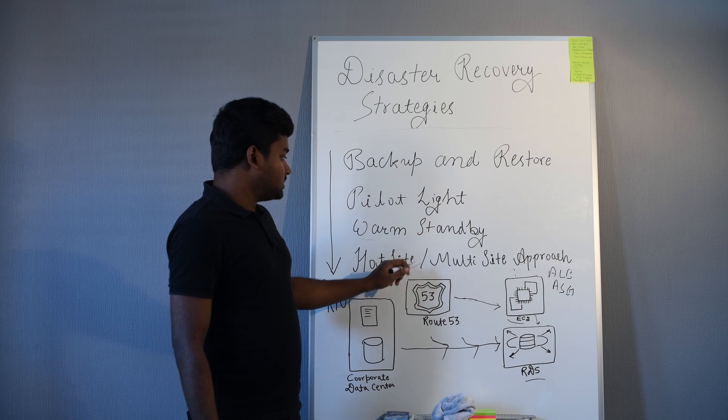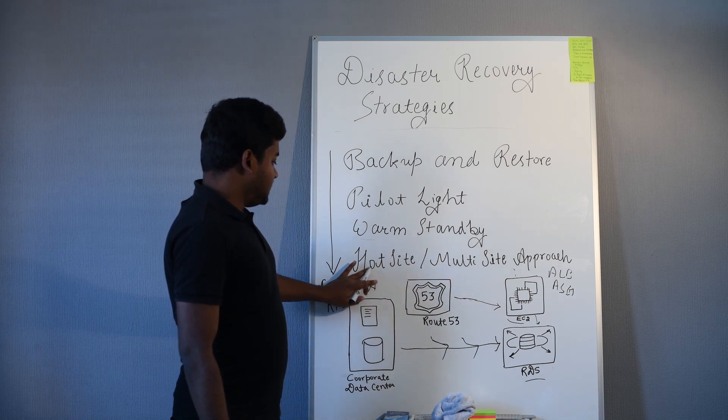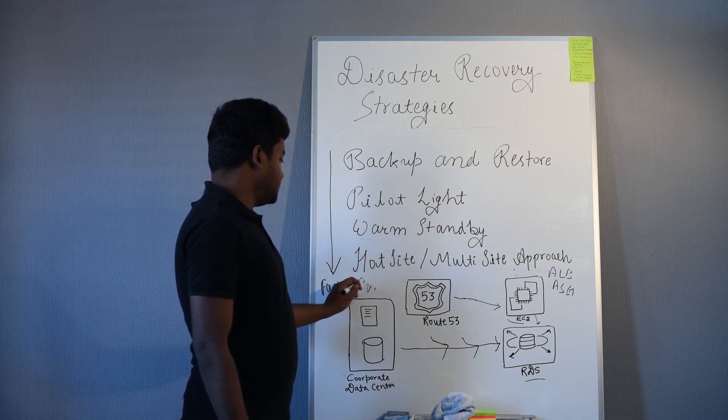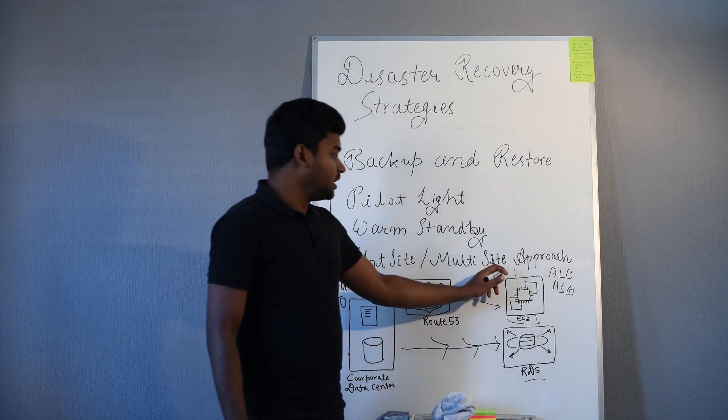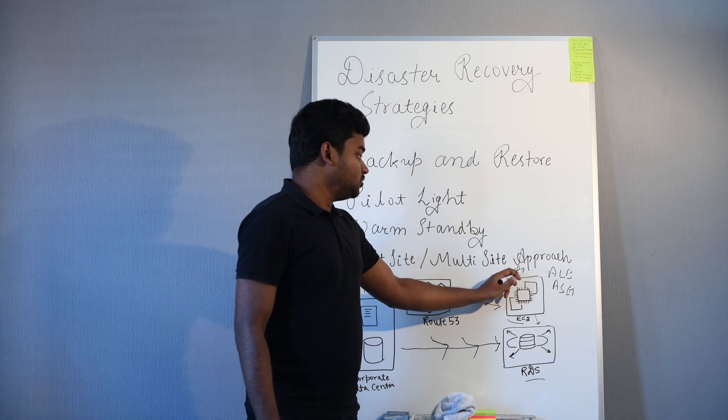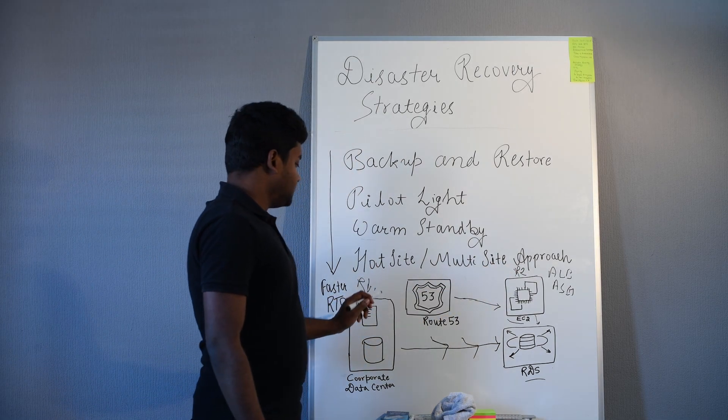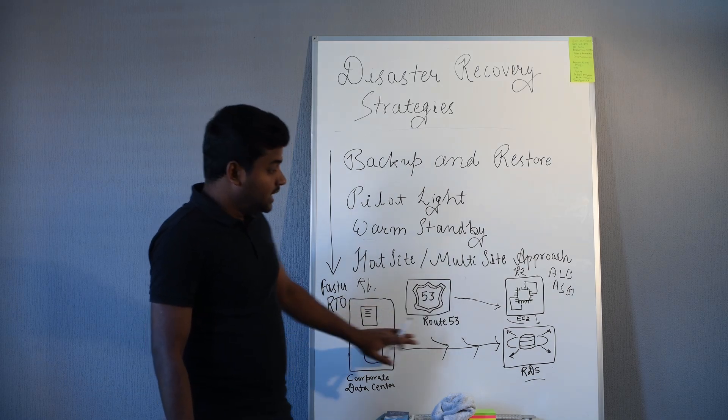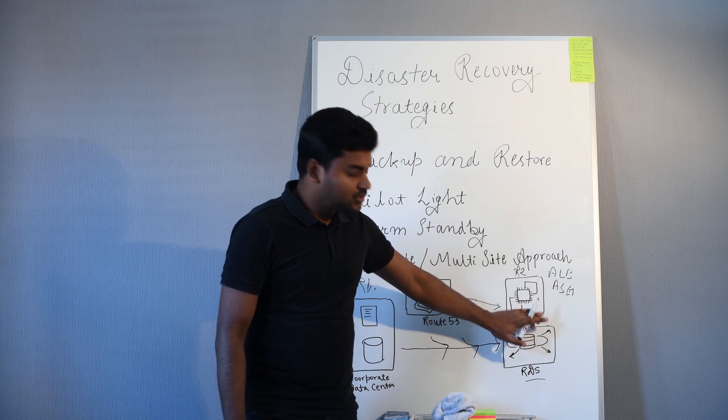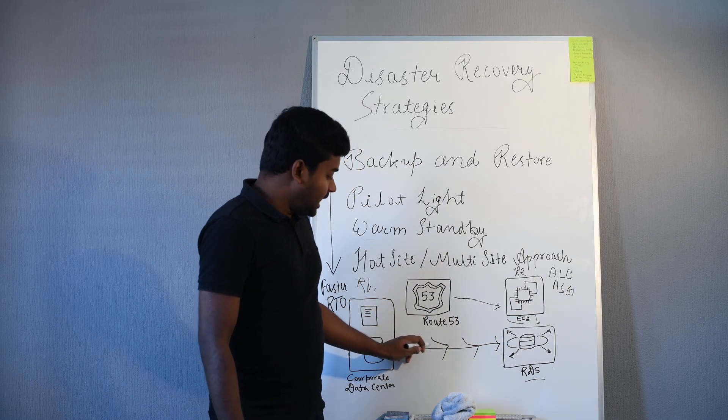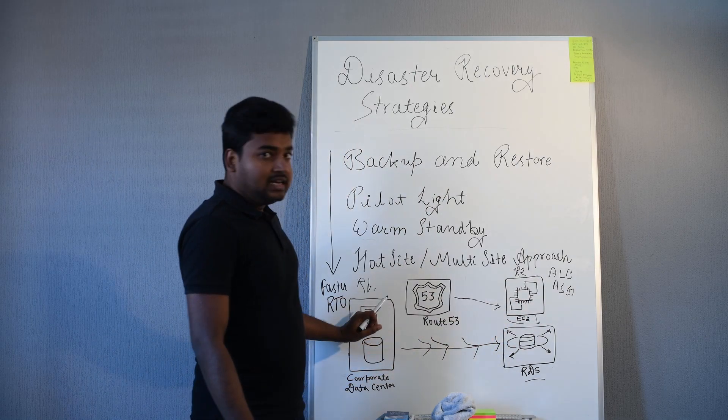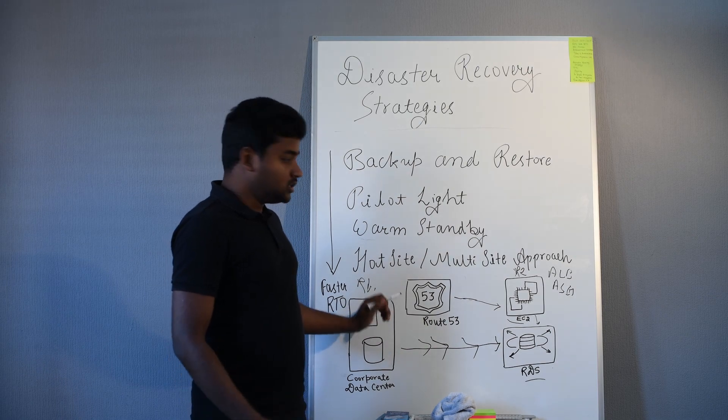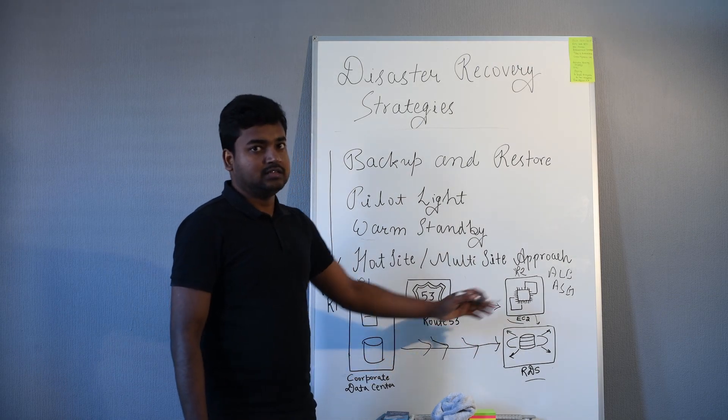In the hot site multi-site approach, let's say this is one region or on-premise, and this is another AWS region. Region one has some disaster or problem. Region two has all the infrastructure up and running, the database is synchronized, and it will take very less time. What you need to do is just route the traffic to another region. That's it.